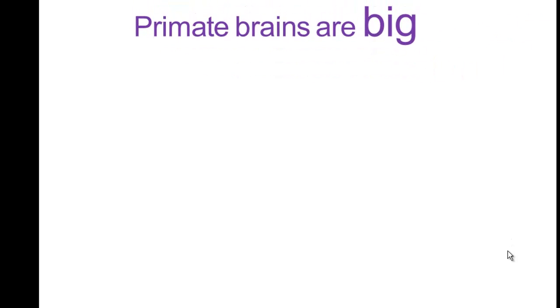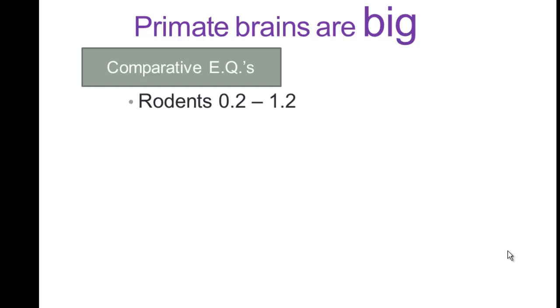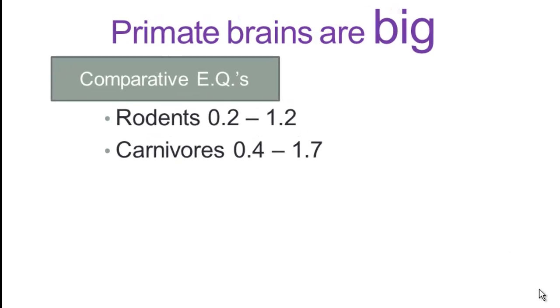So adjusting for allometric scaling, we find that indeed primate brains overall are big relative to mammals. So here are some comparative EQs from just one study. And there is variation from one study to the next. But in this study, rodents, their EQ ranges from 0.2, a brain that's a fifth the size that's expected for a mammal of their size, to 1.2, 1.2 times larger than expected. Surprisingly, carnivores are very similar from 0.4 to 1.7.